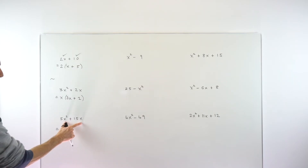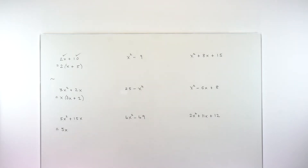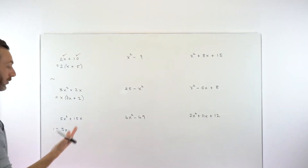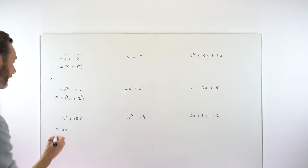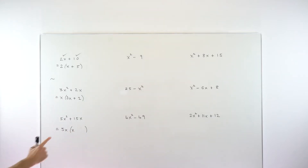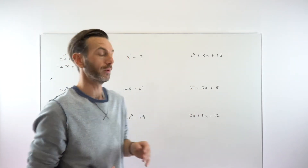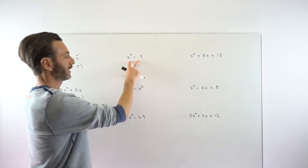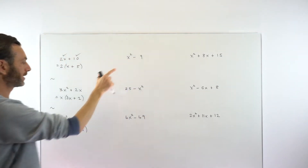It's important to note that with common factors you only use one bracket. The next type is called a difference of two squares — a very recognisable form. It literally means something squared minus something squared. 'Difference' in mathematics means minus. Here we've got x² minus 9, which is 3 squared. Look out for square numbers like 4, 9, 16, 25. That's a classic form for a difference of two squares. It works by two brackets.